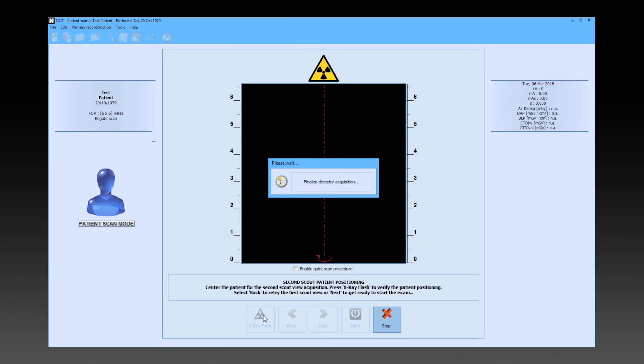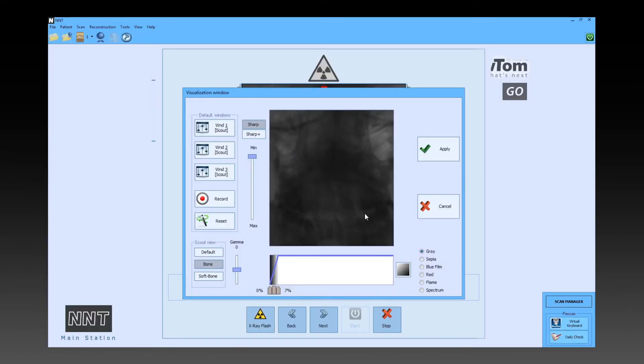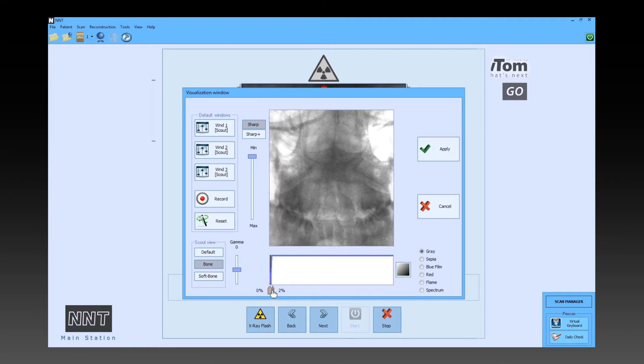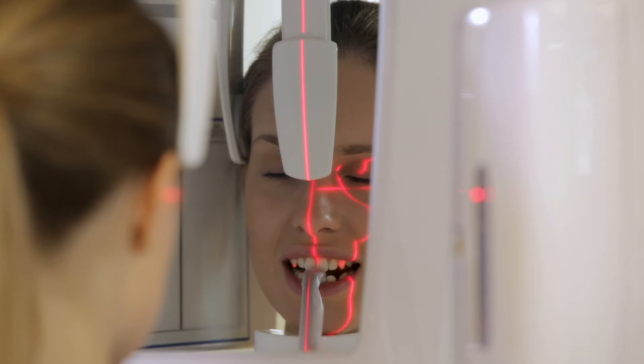The next front scout image is only performed to automatically set exposure parameters. When the parameters are set and the patient is correctly positioned, the dentist presses next and before leaving the room, asks the patient to close her eyes and swallow.